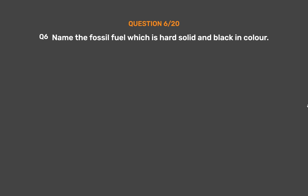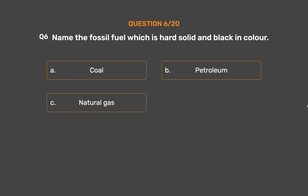Question number 6: Name the fossil fuel which is hard, solid, and black in color. Option A: Coal. Option B: Petroleum. Option C: Natural gas. Option D: None of these.